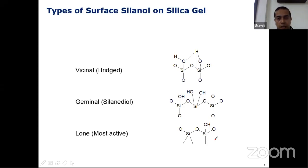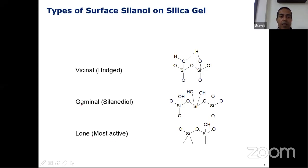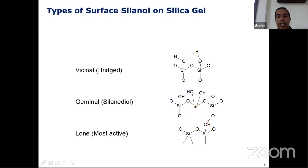Vicinal silanol groups can be connected by hydrogen bonds and therefore they're pretty much stable, so they do not pose as many problems as what we call lone silanols — these are the most active silanols. We also get to see another type called geminal silanol, when you have two different hydroxyl groups connected to the same silicon atom. But the lone one, which does not have any connection to any other group, cannot be stabilized. These groups can interact depending on different parameters and therefore each poses a potential problem, especially in the case of basic compounds.